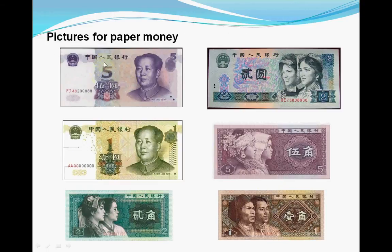This is the 5 yuan. You can say wǔ yuán or wǔ kuài. This is the 2 yuan. You can say liǎng yuán or liǎng kuài.